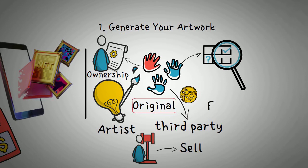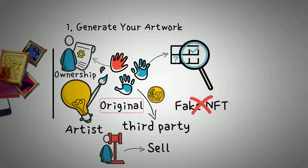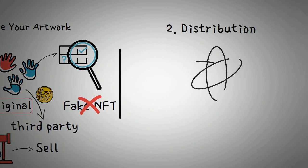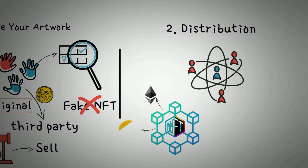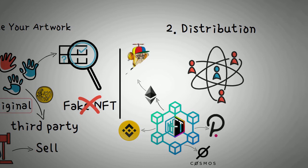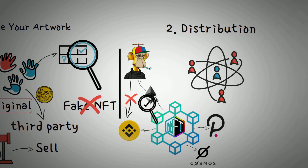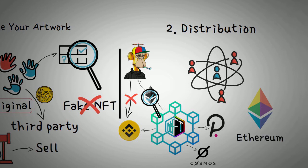Step two is distribution. Distribution is interesting because you have a few different options. The first thing you need to know is that there are a bunch of blockchains that support the NFT token standard, including Ethereum, Binance Smart Chain, Cosmos, and Polkadot. Bear in mind that once you mint your NFT on a blockchain, it's basically impossible to move it to another. So take some time to research each of the different blockchains to figure out if you have a preference. Go with Ethereum if in doubt, because that's the most popular — however, Binance has more affordable transaction fees.